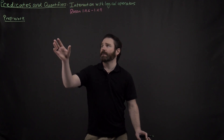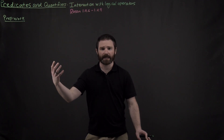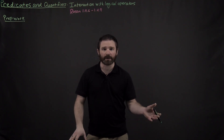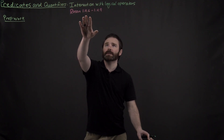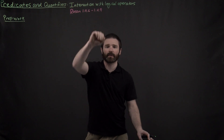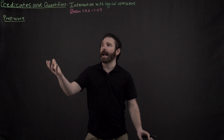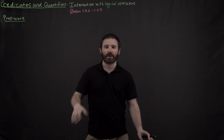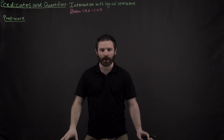Now that we have all of our different predicates and quantifiers defined, and we understand these things, we want to understand how they interact with our other logical operators, like our ands, our nots, our ors, etc. All of this is contained in Rosen's section 1.4.6 through 1.4.9, and before we actually discuss how our quantifiers interact with our different logical operators, we need to do a little bit of prep work.